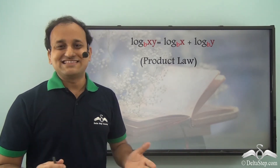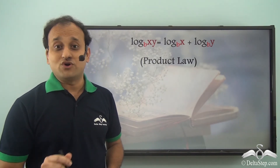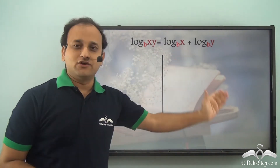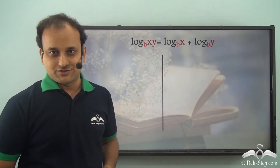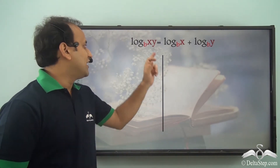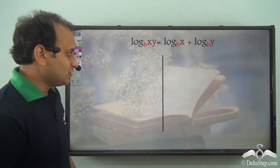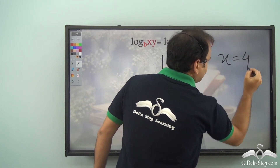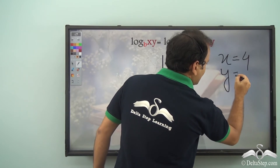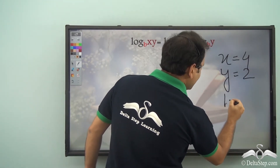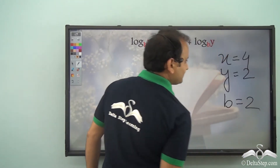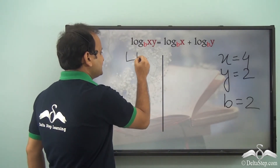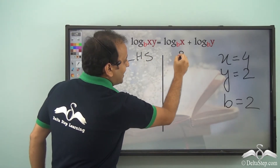But does the product law actually hold true? Since Sam had recently started this job he didn't want to make any mistakes. So he decided to verify the law by assuming some values: x = 4, y = 2, and b = 2.